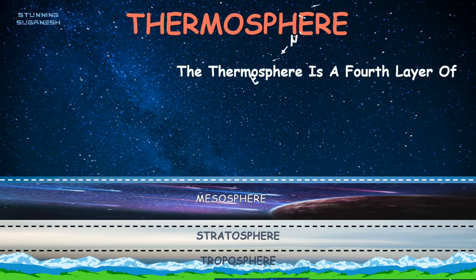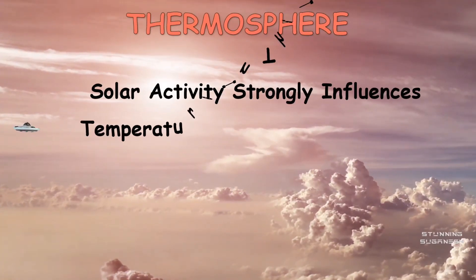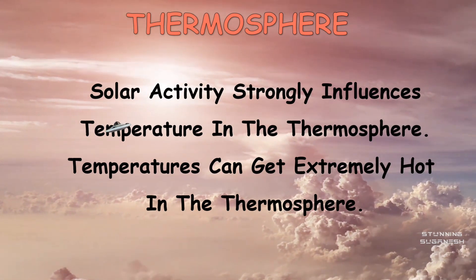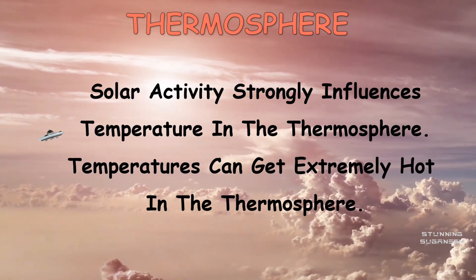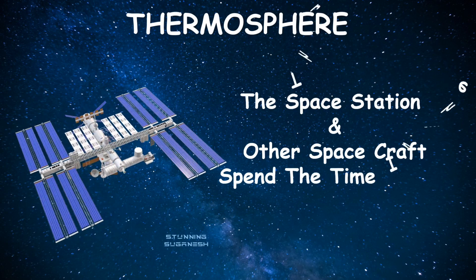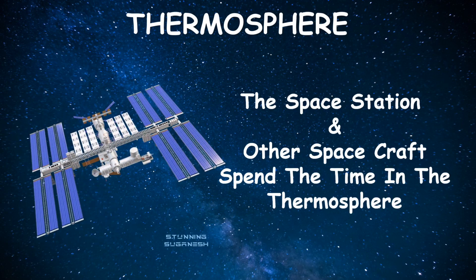The thermosphere is the fourth layer of Earth's atmosphere. It extends from about 85 kilometers to 700 kilometers above our planet. Solar activity strongly influences temperature in the thermosphere, and temperatures can get extremely hot. The space station and other spacecraft spend time in the thermosphere.